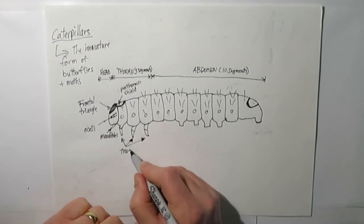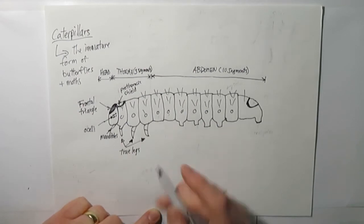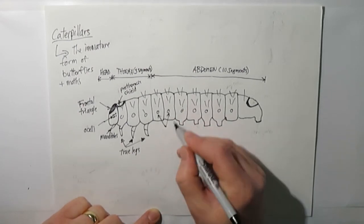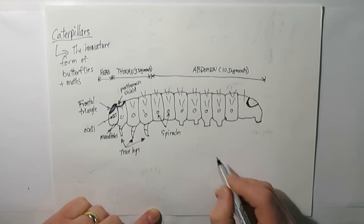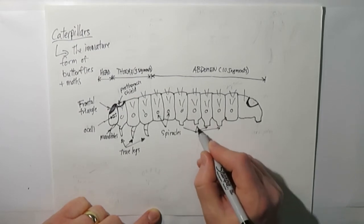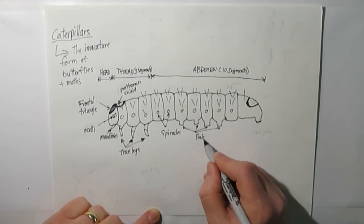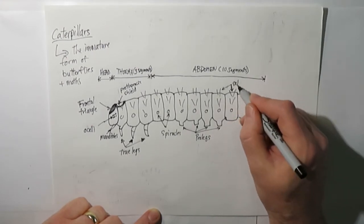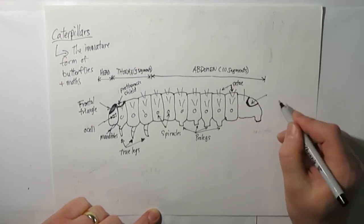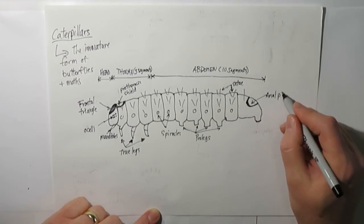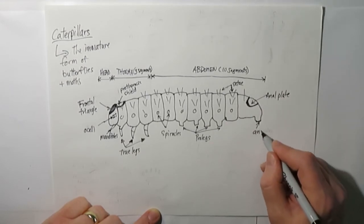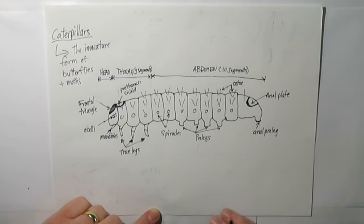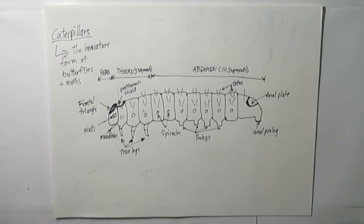Caterpillars have three true legs at the front. These little dots are called spiracles; they're actually breathing pores. There'll be four prolegs on the abdominal sections. Then there's the setae which can vary quite a bit. This is an anal plate which can vary, and an anal proleg, basically the leg on the back end of the caterpillar.